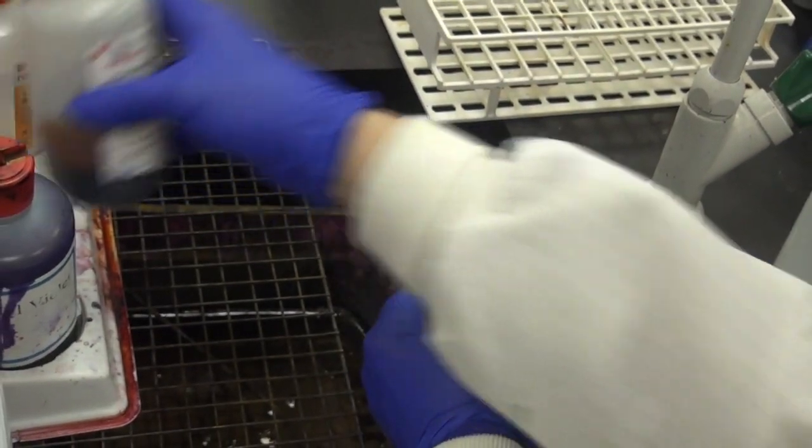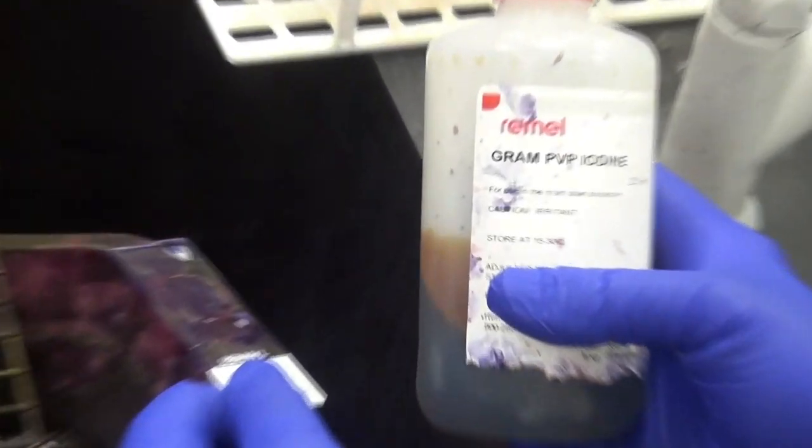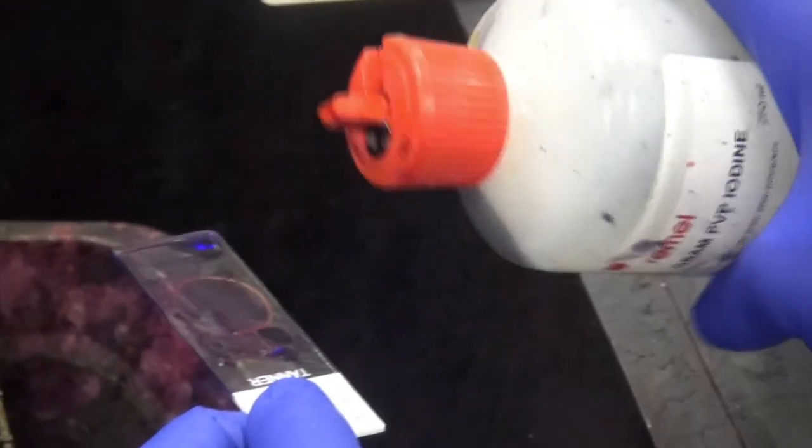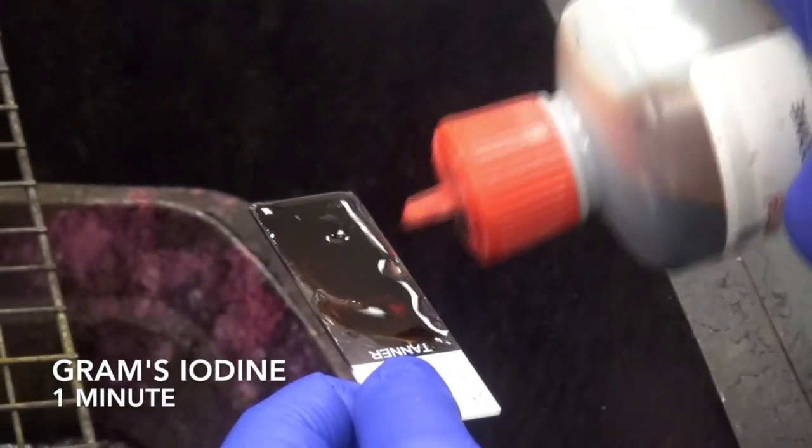Then flood the slide with our second reagent, the Gram's iodine. The iodine is a mordant and helps the primary stain to penetrate the bacterial wall.